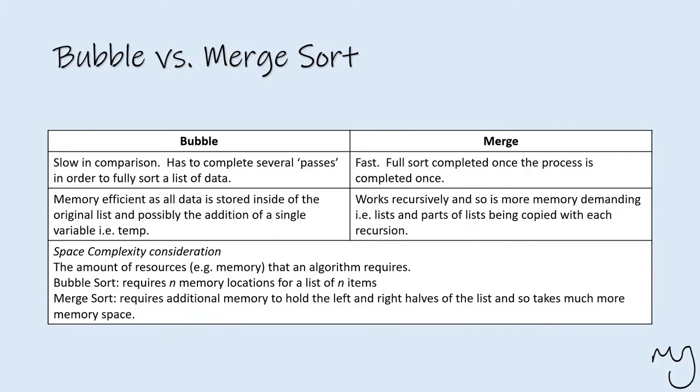It has to complete several passes in order to fully sort the data list. So every time we go through a bubble sort passing of the iteration, it's only ever going to have changed the position of two values. And so in order to make sure that something is fully sorted, it often has to go through that process several amounts of time. In comparison to the merge sort, which is faster because the full sort is completed once the process is completed once, because of the way it separates things out.